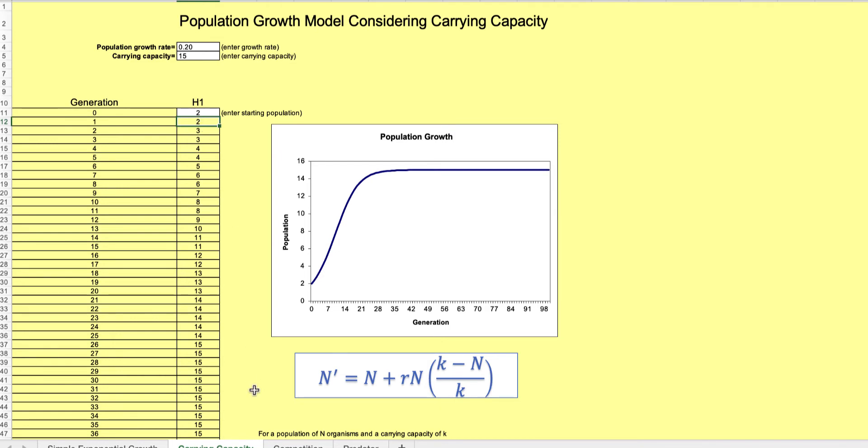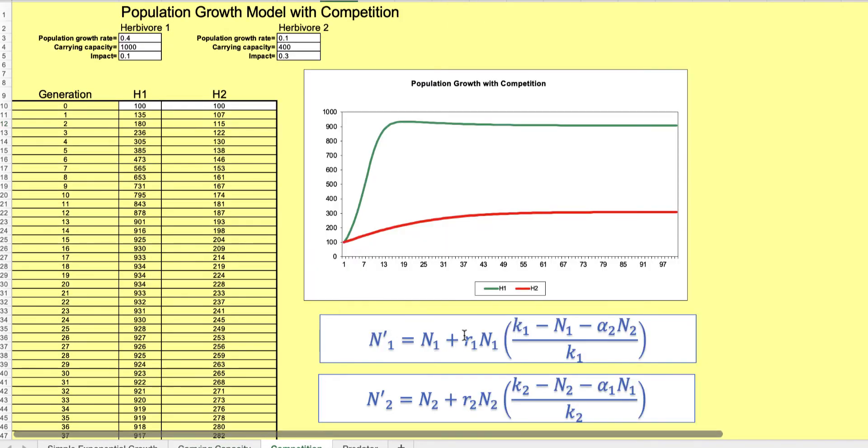Here's competition, so there's two critters here now. We also have a carrying capacity, but now there's both of them competing for a resource depending on how many of them. Let's say that they're both herbivores, there's rabbits and cows.